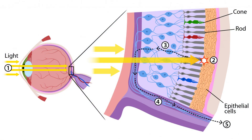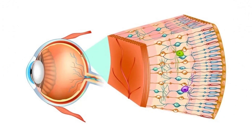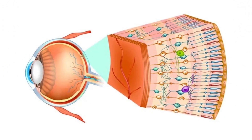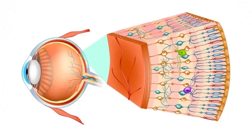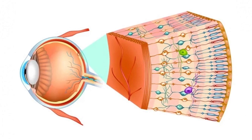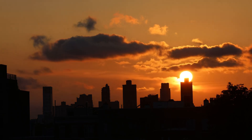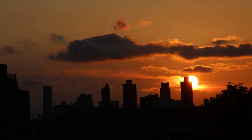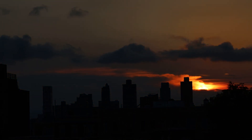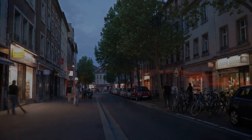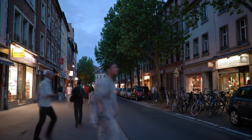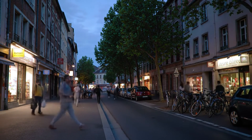Rods are sensitive to light but do not distinguish colors, with the exception of blue and green. Cones capture all colors and help us see more clearly, but they cease to function in insufficient light. This is why our vision weakens at dusk — we distinguish colors less effectively and see everything in blue or grayish-green tones. The French call this time of day "l'heure bleue," or the blue hour.